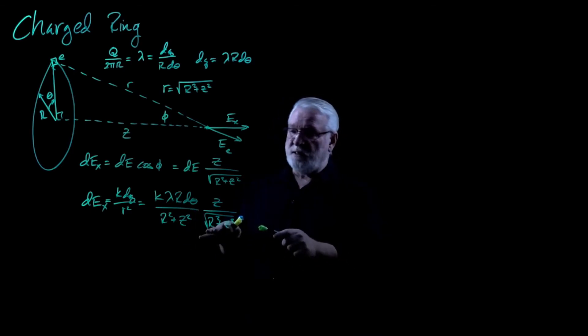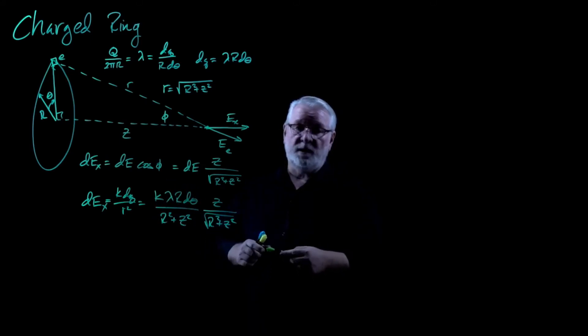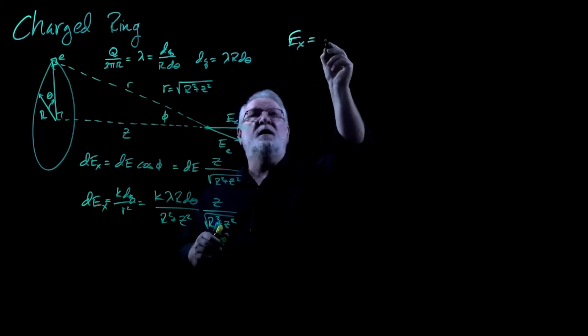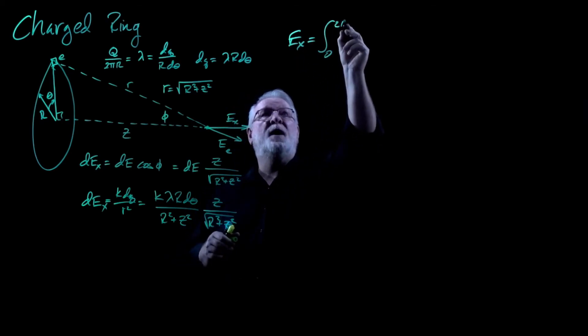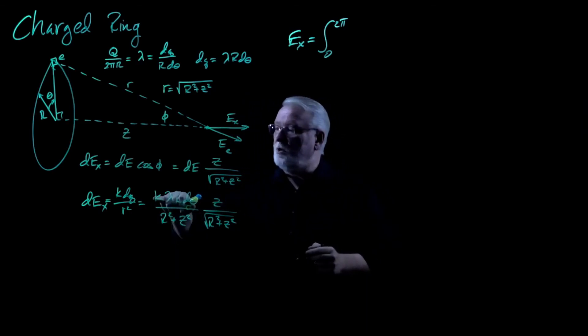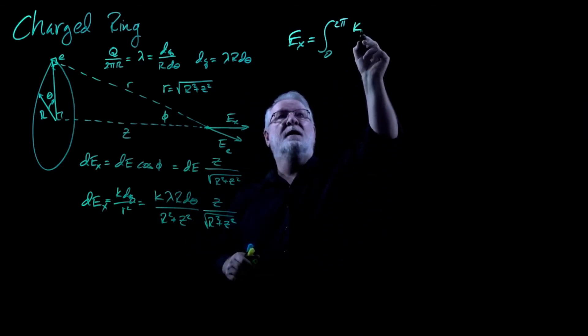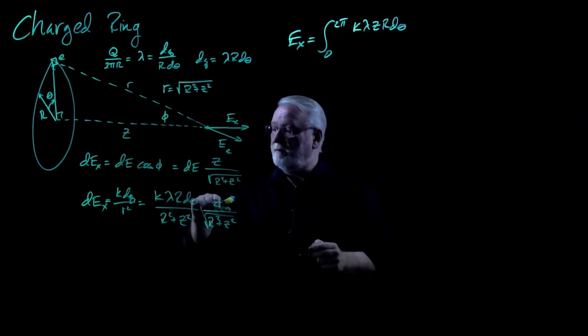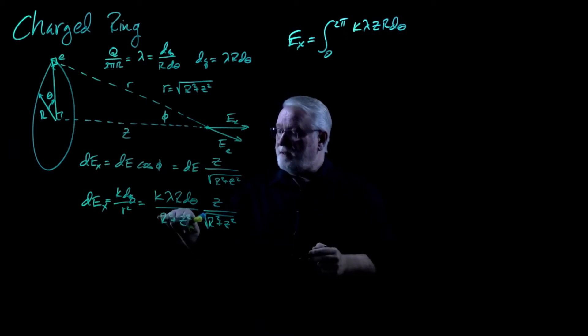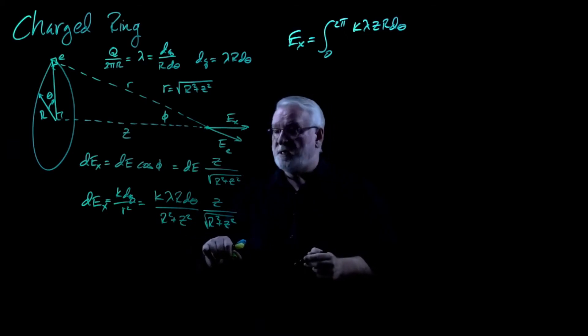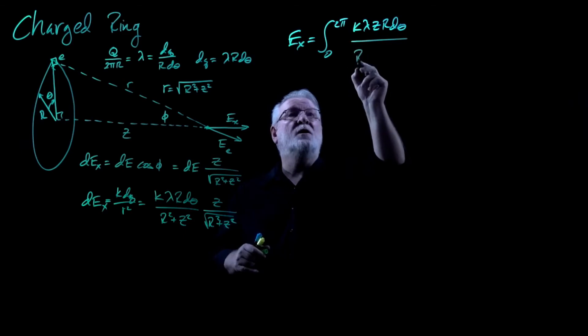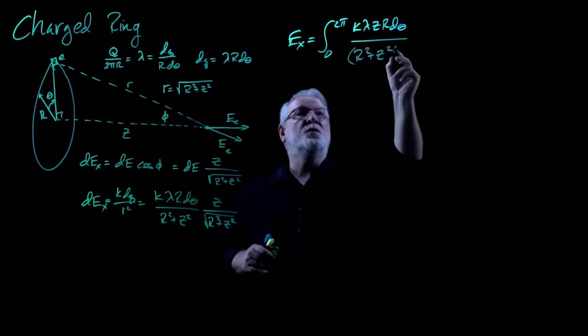Now, initially, this looks complex, but again, let's rewrite it, put in the limits of integration, and really analyze it. So EX is going to be equal to the integral from zero to 2π of, well, let's rewrite this numerator. It's going to be K lambda Z R dθ. K lambda Z R dθ. And then the denominator is just going to be this quantity to the three halves. We've got it fully to the first and then to the one half. So that's one and a half or three halves. So the denominator is R squared plus Z squared to the three halves.